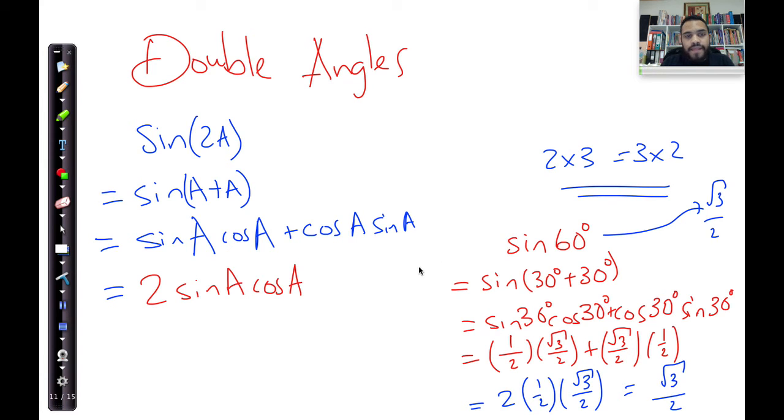Okay. So that's one of the double angle identities. Let's now look at one more. Let's look at cos. For cos, I'm just going to give you the identities.